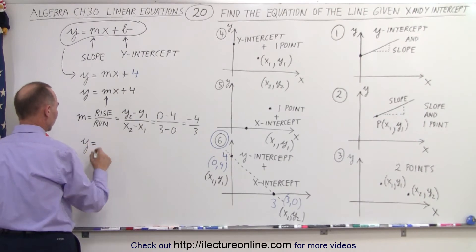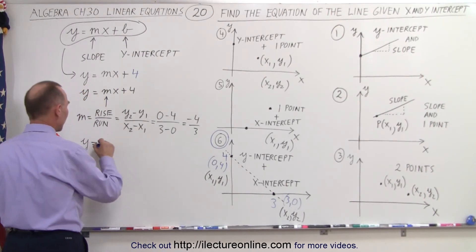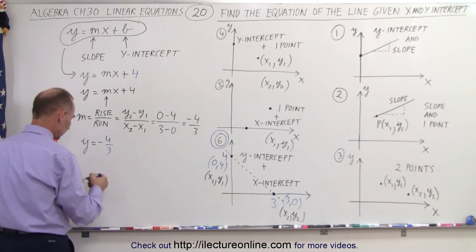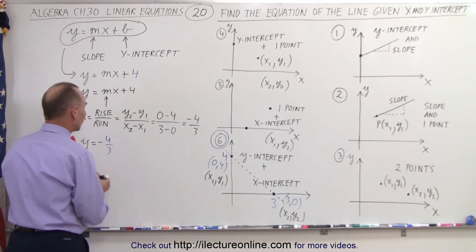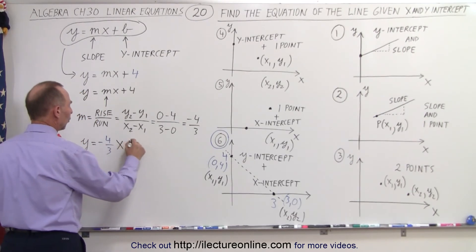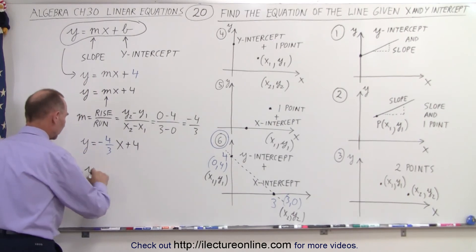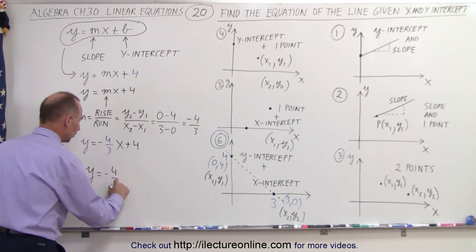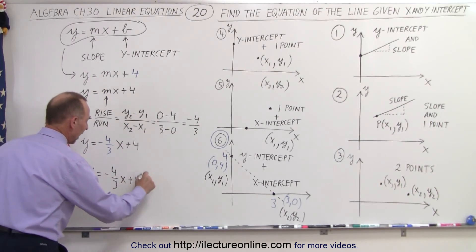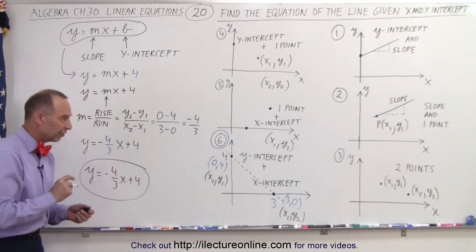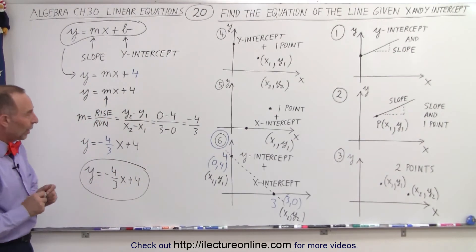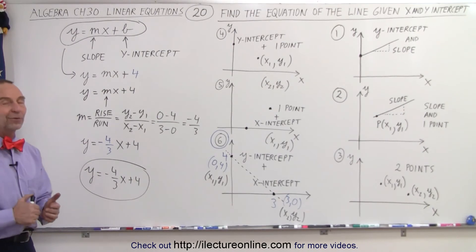So we end up with y is equal to minus 4 thirds times x plus 4. So now, we can simply write y equals minus 4 thirds x plus 4 as the equation we were looking for if we're given both the x and the y-intercept. And that is how it's done.